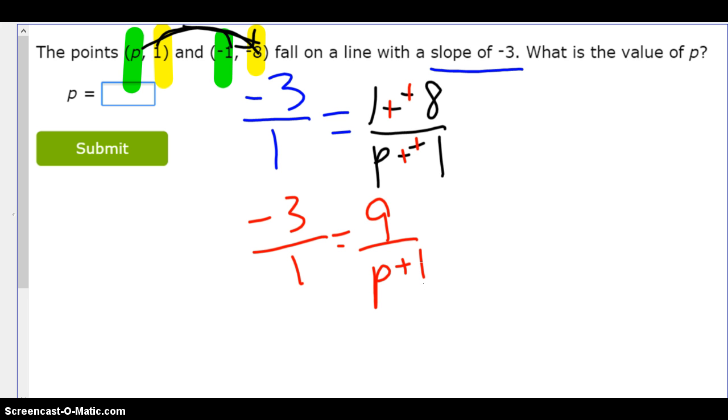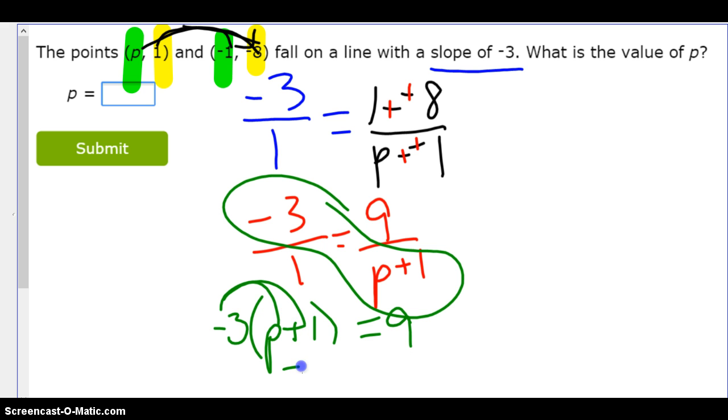Alright, so let's do our keep change changes in there right away. So I've got negative 3 over 1 equals 9 over P plus 1. Oh gosh, that's not as nice as I would like. So here's what I'm going to do. I'm going to multiply these two, which looks like this. Negative 3 times P plus 1. What property is that that you see? Oh yeah, distributive. So I've got to distribute here. So I get negative 3P plus negative 3 equals 9.